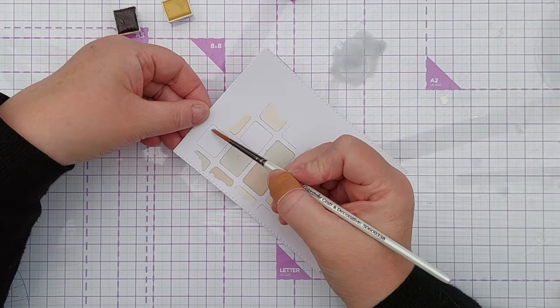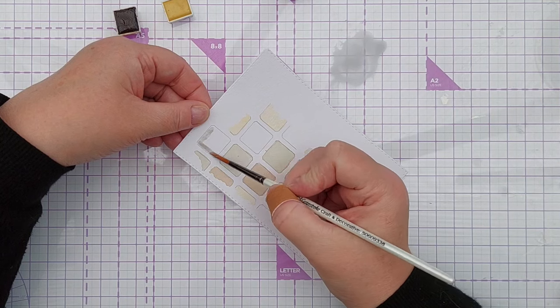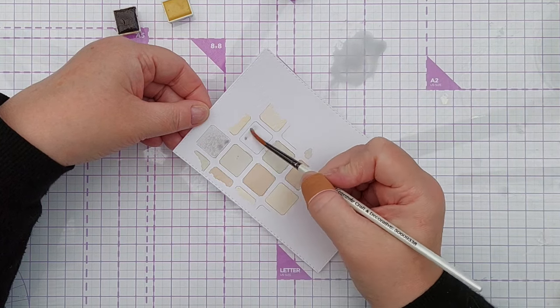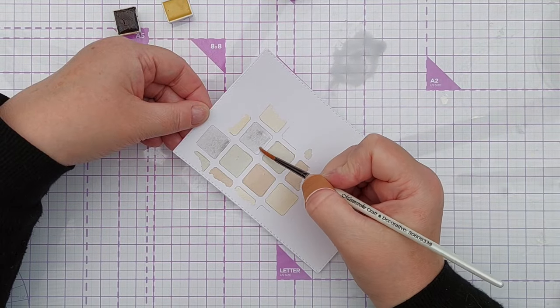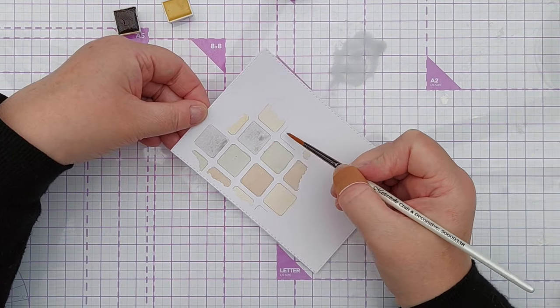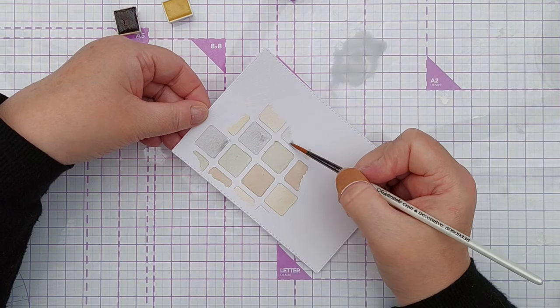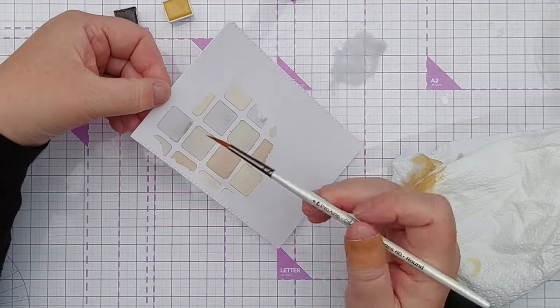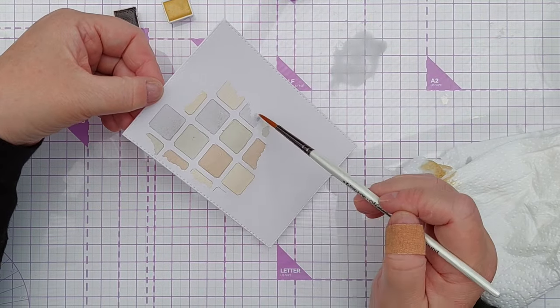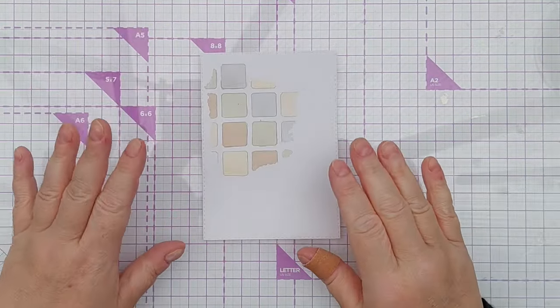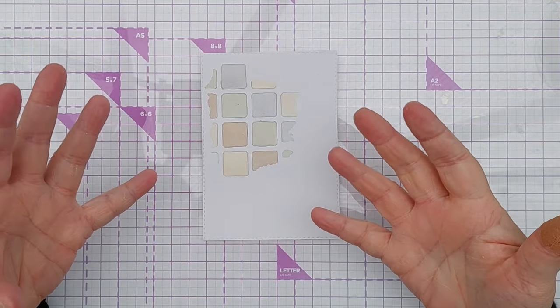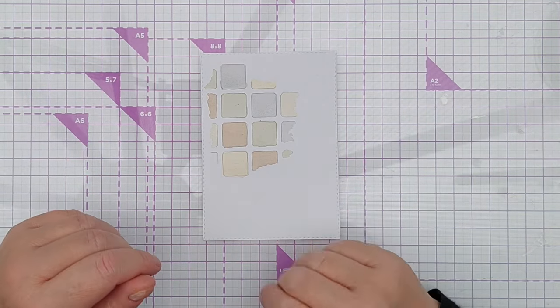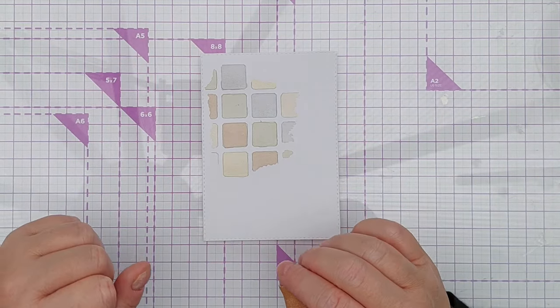Now we're filling the gaps with grey. So I'm going to give that a few minutes to dry naturally and then I'm going to give it a good blast with my hairdryer before I try erasing the pencil lines.